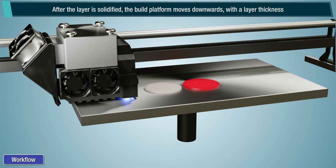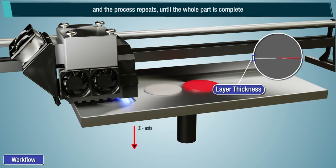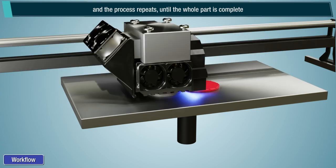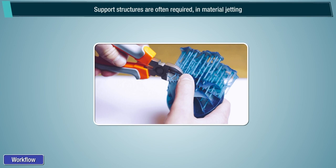After the layer is solidified, the build platform moves downwards with a layered thickness and the process repeats until the whole part is complete. Support structures are often required in material jetting and need to be removed using a sodium hydroxide solution or water jet.